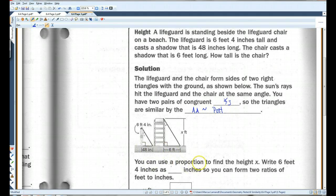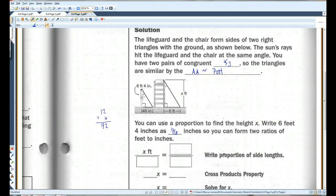We can use a proportion to find the height x. Write 6 feet 4 inches. Six feet, there's 12 inches in a foot. 12 times 6, hopefully you guys know, is 72 inches. 72 inches plus 4 inches is 76 inches. So you can form two ratios of feet to inches.